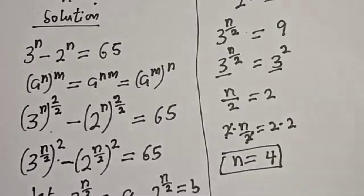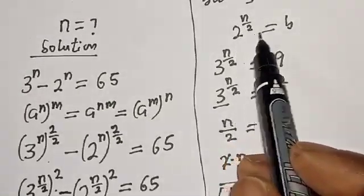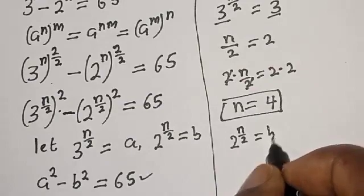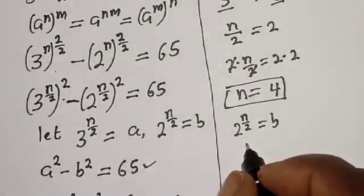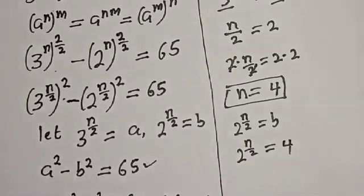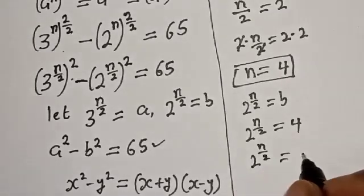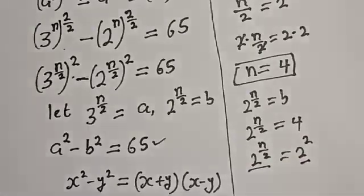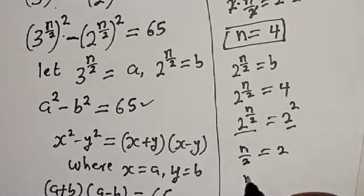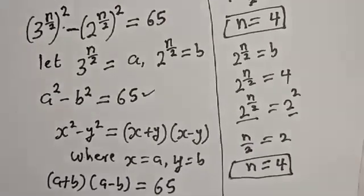Let's also check using b. We have 2 raised to power n over 2 equals b, and b is 4. So 2 raised to power n/2 equals 4, which is 2 squared. Using the same base, n over 2 equals 2, so n equals 4. Both equations confirm n equals 4.